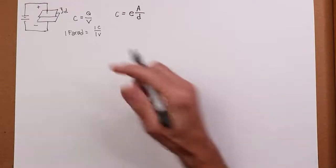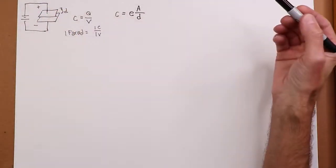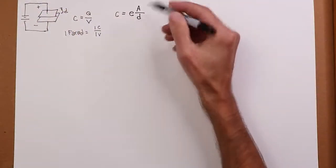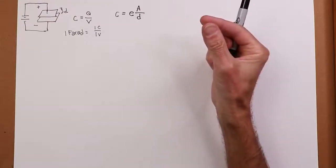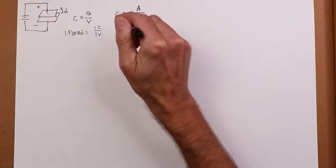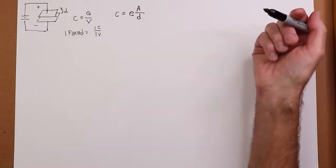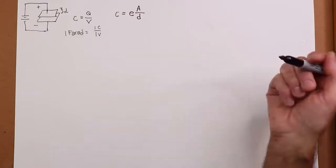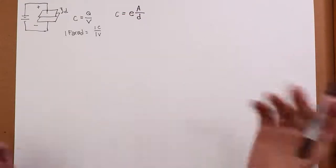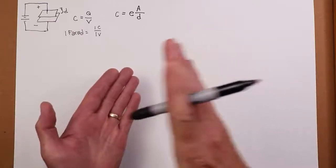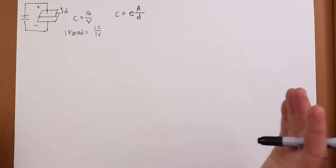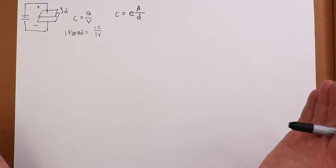So obviously the larger the plates are, the more capacitance we're going to get. The closer the plates are, the more capacitance we're going to get. The higher the permittivity, the more capacitance we're going to get. Now that would make you think, well if I want a lot of capacitance I want these plates to be really, really close and I want a large area and a high permittivity. Is that all there is to it?